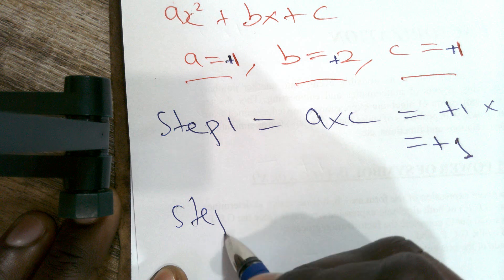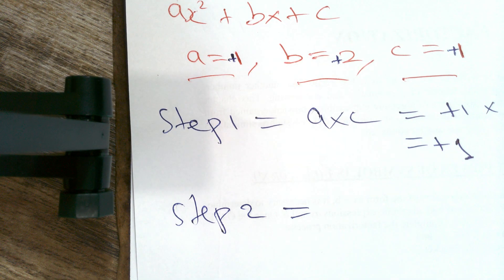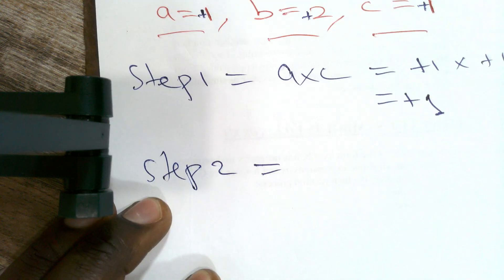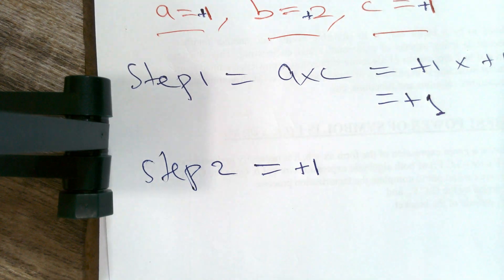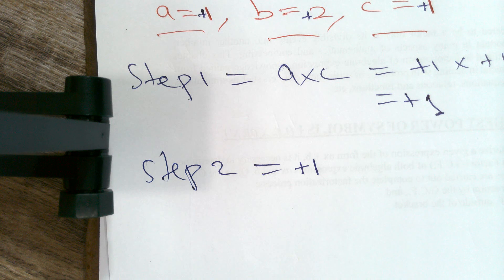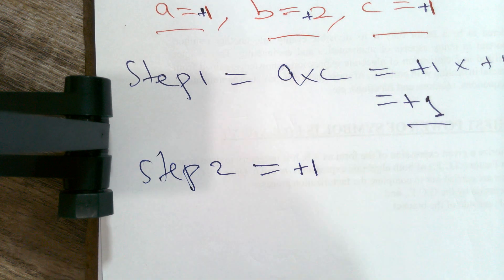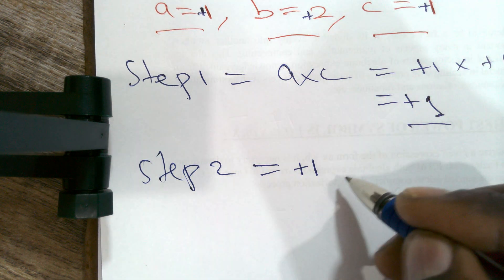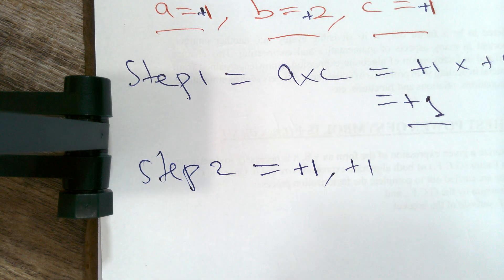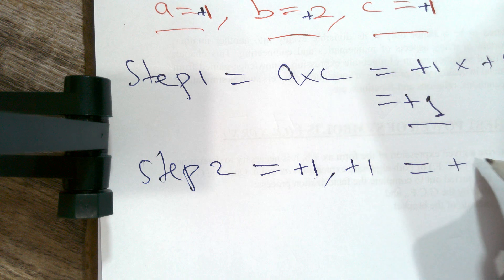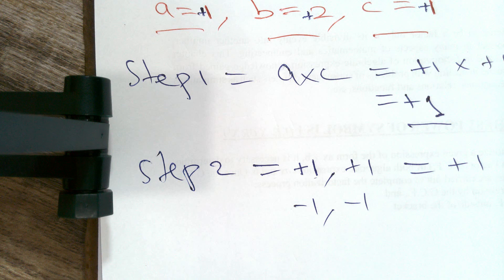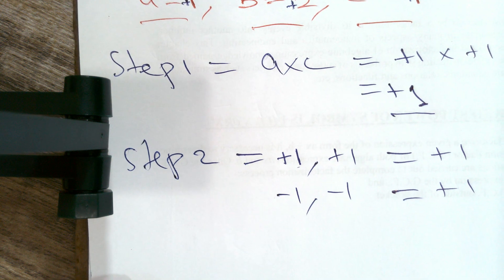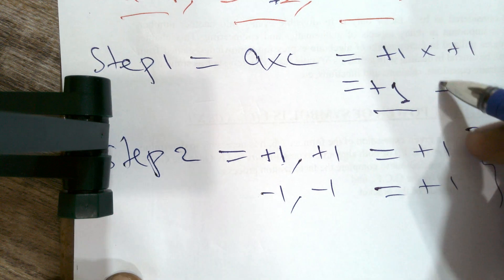Step two: find factor pairs. We want pairs of numbers that when multiplied together give the value of a times c, which is positive 1. One factor pair is positive 1 and positive 1 — multiply them and we get positive 1. Another is negative 1 and negative 1 — multiply them and we also get positive 1. So those are the two factor pairs corresponding to this value of ac.